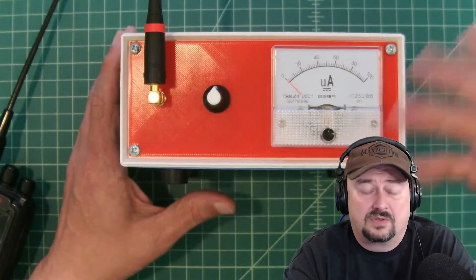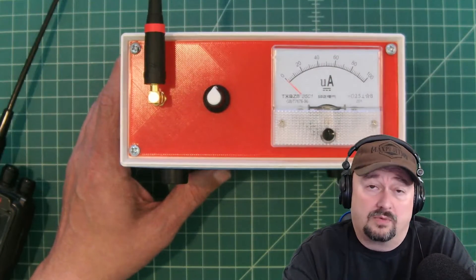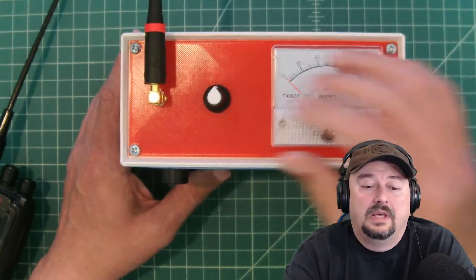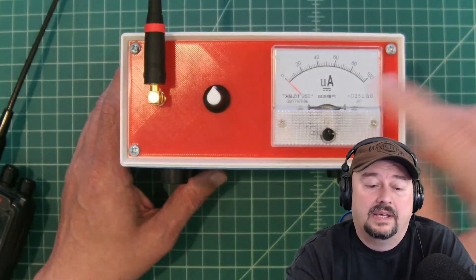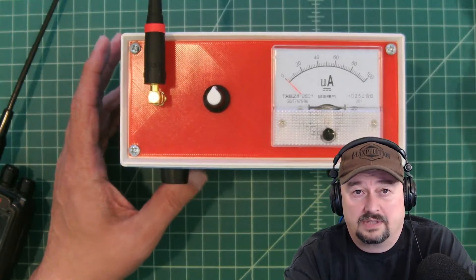The reason it's called relative is that you use this to see if my signal is stronger or weaker relative to another signal. You can adjust this potentiometer, which attenuates the signal coming in if you have a very strong signal that you're measuring.